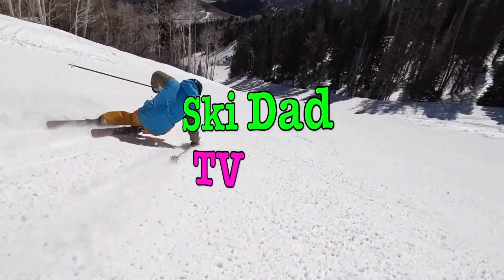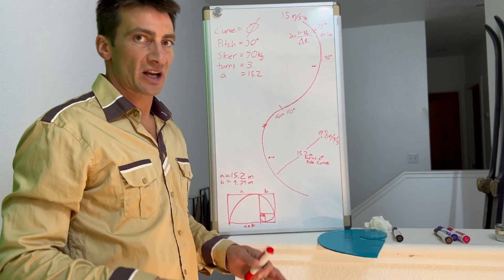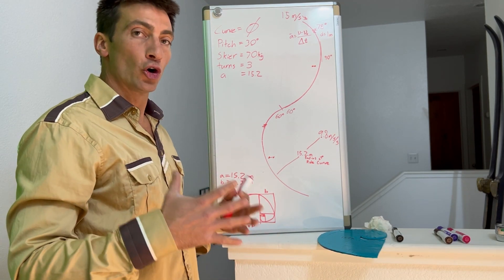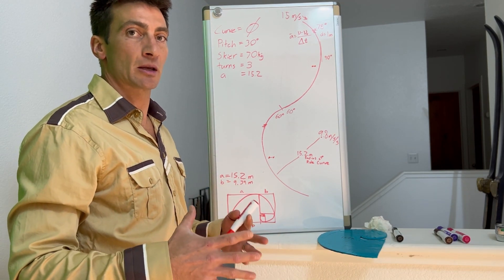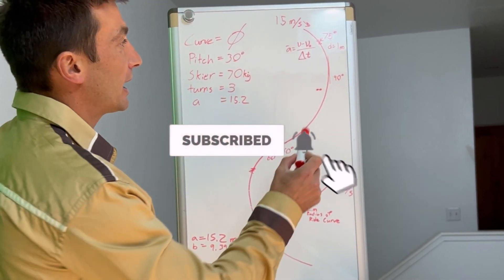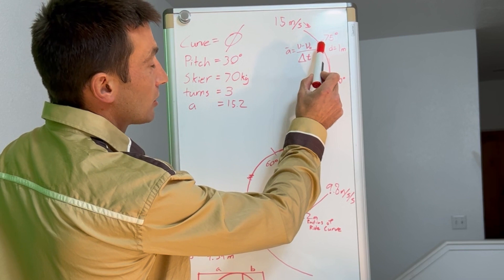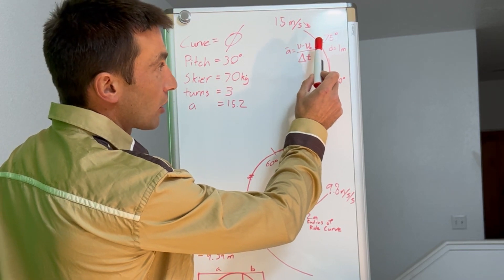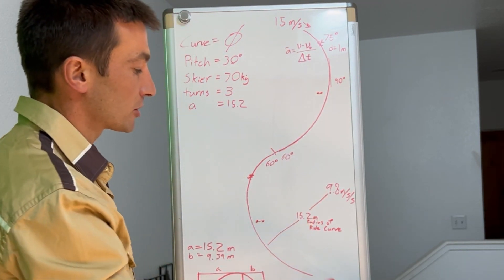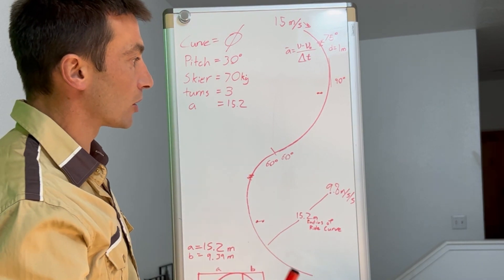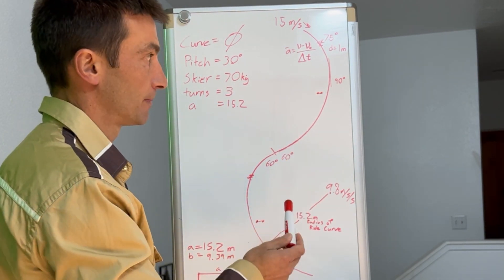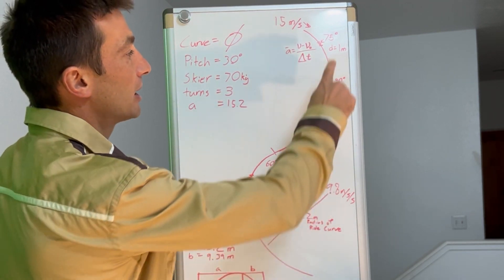Welcome back to Ski Dad TV. In this video I'll be presenting what I think is the ultimate ski racing math problem. I've talked for a long time about how a deceleration or a stiv or a butter or feather at the top of the turn will inevitably be faster down the race course than a deceleration or a speed dump at the bottom of the turn.